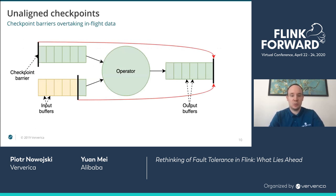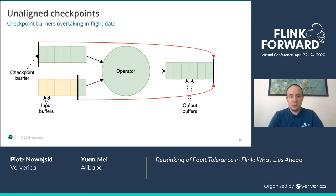With unaligned checkpoints, the core idea is to let the checkpoint barriers overtake in-flight data. When snapshotting state, if we consider the in-flight data as part of the operator state, we don't have to wait for checkpoint barriers to be aligned on the input. In that case, we can also let the checkpoint barrier overtake the output buffers. That means the in-flight data — both input and output buffers, as you can see on the slide — will have to be persisted alongside the operator state.